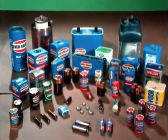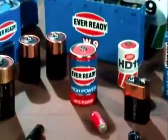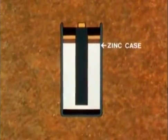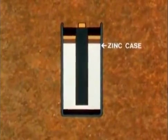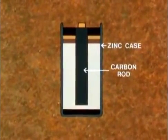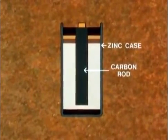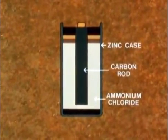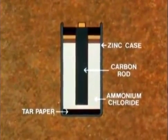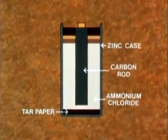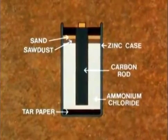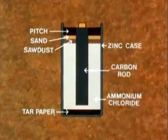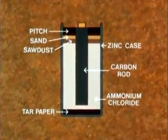In practice, the most common type of primary cell is the flashlight battery or dry cell. The zinc plate is now formed into the case containing the electrolyte. The copper plate is replaced by the central carbon rod, and the electrolyte is a paste of the chemical called ammonium chloride. At the bottom, a tar paper washer makes sure the carbon rod doesn't touch the zinc. And at the top, layers of sawdust, sand, and pitch hold the rod in place and prevent electrolyte leakage. In use, the zinc and the electrolyte are gradually used up until the cell is dead.